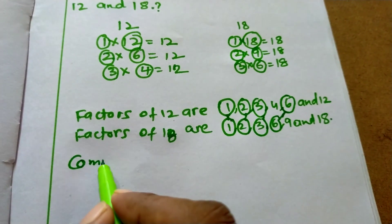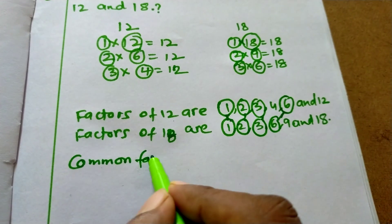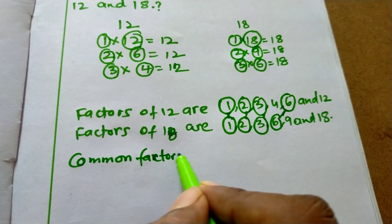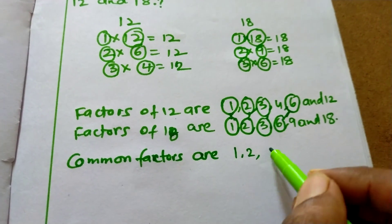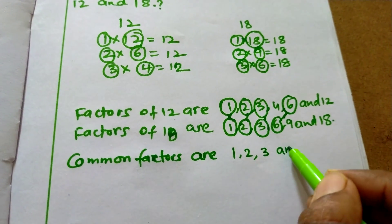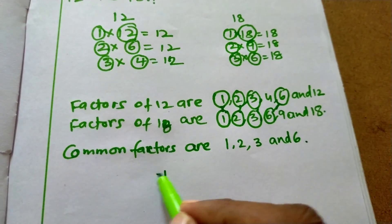So the common factors are 1, 2, 3, and 6. Thank you.